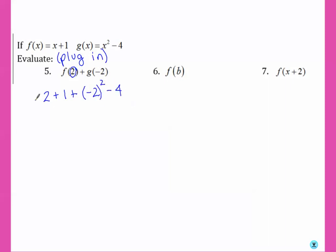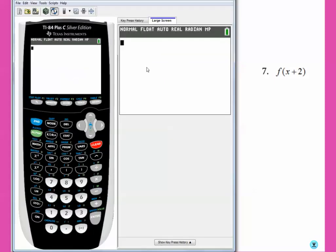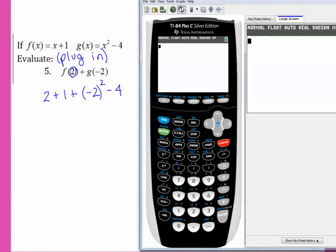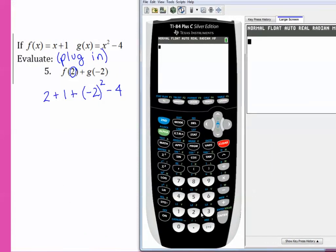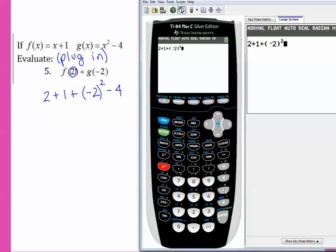We can type that all in one line in our calculator: 2 plus 1 plus negative 2 squared minus 4. Make sure you use parentheses when plugging in negatives. And we get 3.